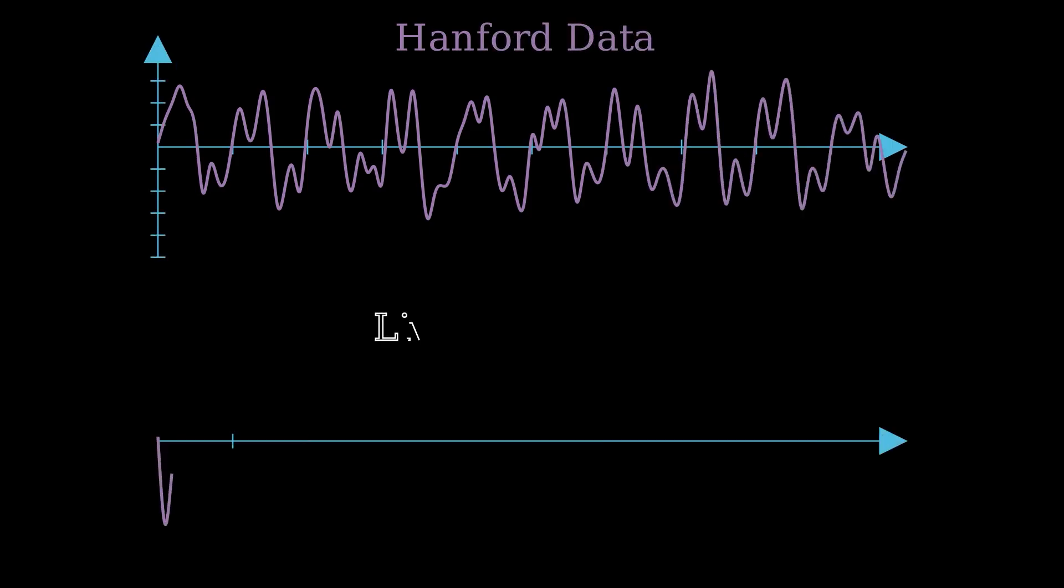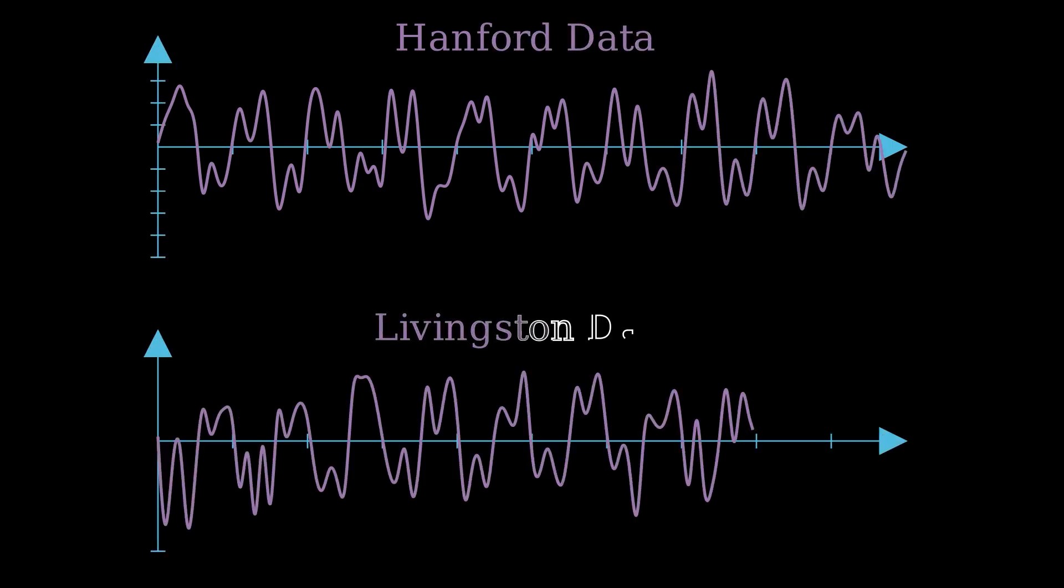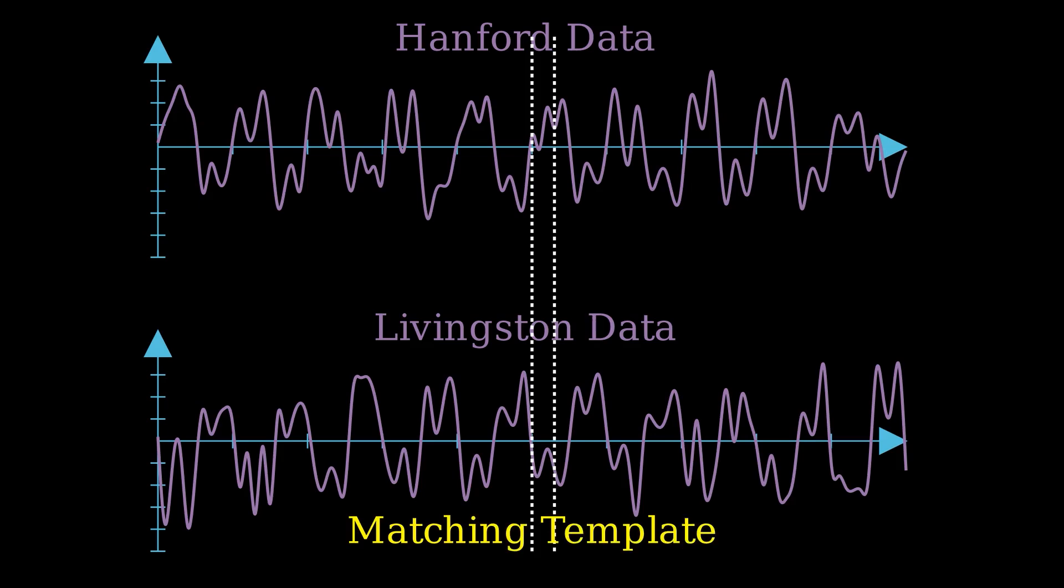Even if the signal shows a match, the moment of truth follows. To be sure that the signal that they measured was real, even if it corresponded to the theoretical predictions, the signal must also be measured at both detectors, about 10-15 milliseconds apart from one another.